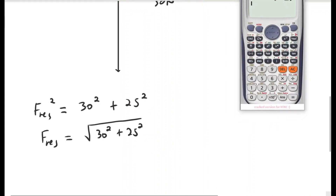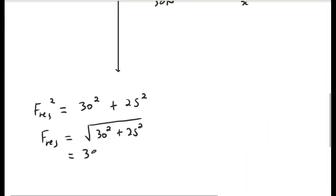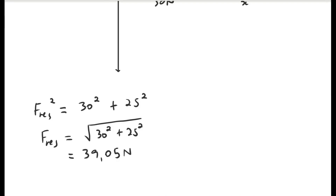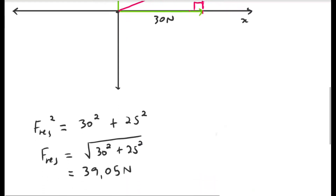F-res equals the square root of 30 squared plus 25 squared. I'll pull out my calculator and punch in the numbers — the square root of 30 squared plus 25 squared equals 39.05. So F-res has a magnitude of 39.05 newtons. At this point we do not yet know the direction, so we need to work that out.